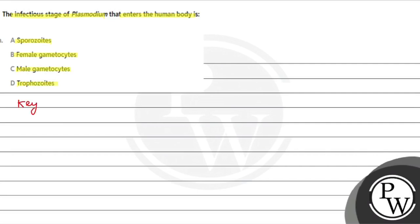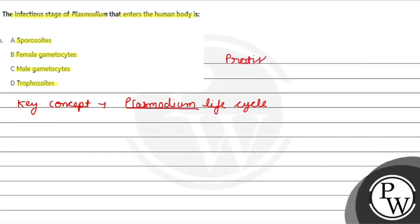Let's see the key concept here — what is the Plasmodium life cycle and how does it work? When you read biological classification: Monera, Protista, Fungi, Plantae, Animalia. Protista is the protozoan group. Protozoan — specifically Sporozoan. Plasmodium belongs to Sporozoan, Protozoan.